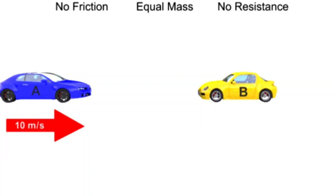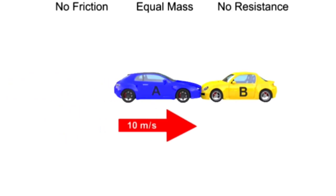Momentum after the accident, however, is conserved. With no road resistance, the doubly massive car wreck will continue moving in the same initial direction as car A, but at half the speed.